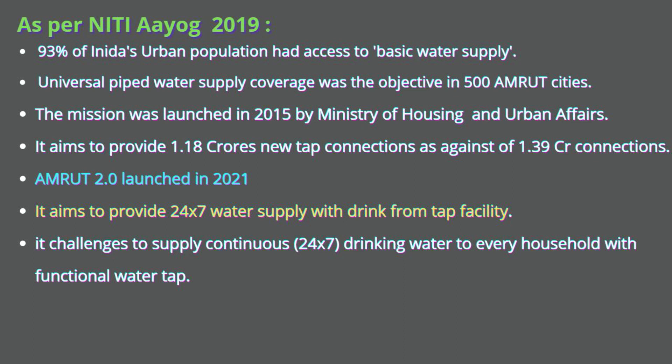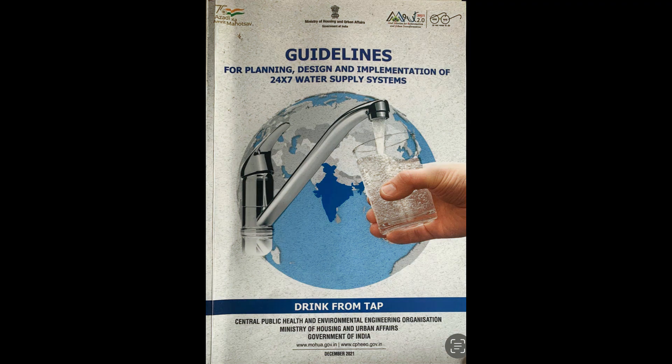AMRUT aims to provide tap connections — 1.1 crore new tap connections have been provided under AMRUT against the target of 1.39 crore connections. One of the main objectives of the recently launched AMRUT 2.0 is to provide 24x7 water supply with drink-from-tap facility in 500 AMRUT cities. There lies a great challenge ahead to supply continuous drinking water to every household with a functional water tap. Challenges faced by ULBs include non-availability of guiding documents; an operational approach and present guidelines have been given in AMRUT 2.0.